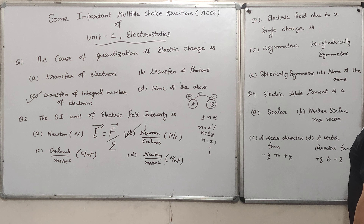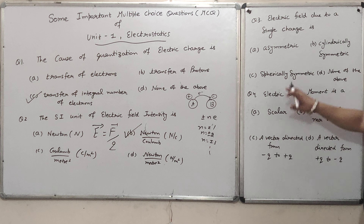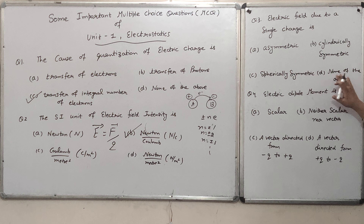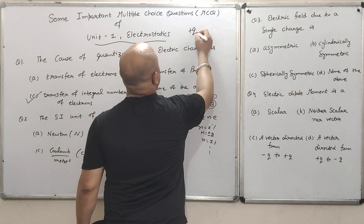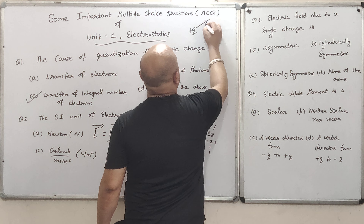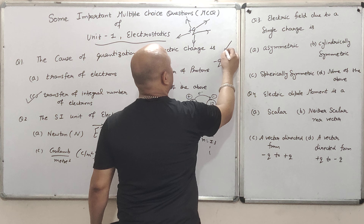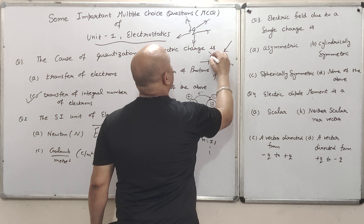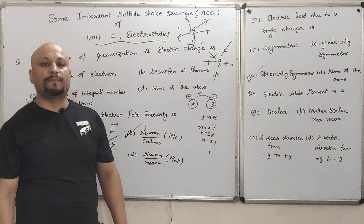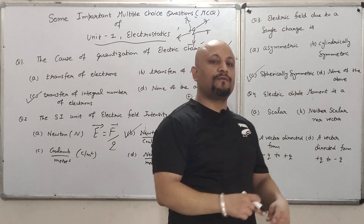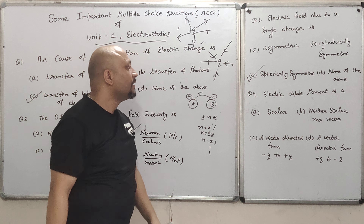Question 3: The electric field due to a single charge is — options are: asymmetric, cylindrically symmetric, spherically symmetric, none of the above. My dear students, there are two kinds of charges. If you look at the symmetric spheres, the electric field from a single charge goes equally in all directions like a sphere. So the answer is C — spherically symmetric.